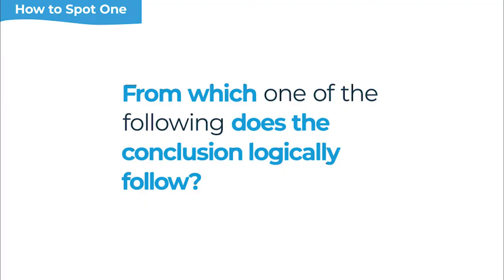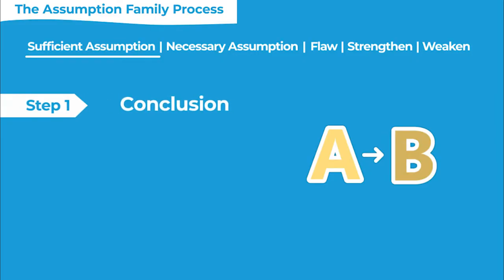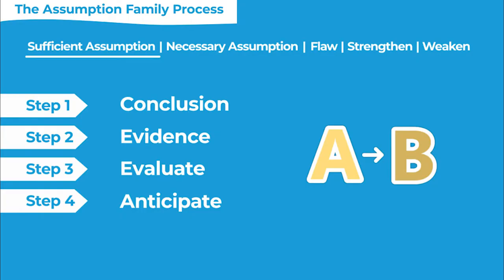It's really hard to prove a conclusion, and so that's going to limit the structures we can use when working on sufficient assumption questions. The process we want to take whenever we're working on any question in the assumption family is the same: find the conclusion, find the evidence for why it's true, evaluate the reasoning — meaning find the gap in the argument — and use that understanding to anticipate what an answer could sound like. Then look through the choices, trying to match that anticipation and using trap answer patterns to make eliminations.